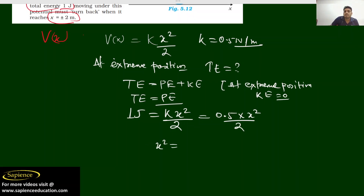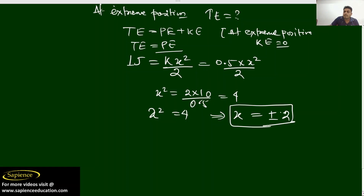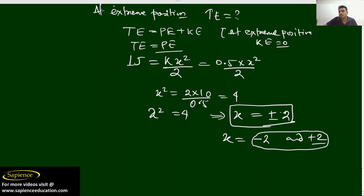So we can write x² = 2 × 1 / 0.5, which gives us 2/0.5 = 4. So x² = 4, and therefore x = ±2. For the value of x = −2 and x = +2, we have maximum potential energy, and that is 1 joule.